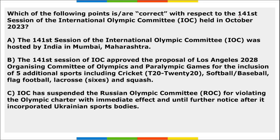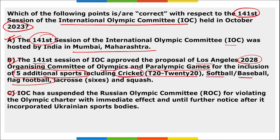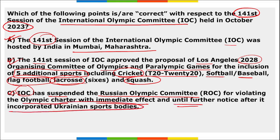Regarding the 141st session of the International Olympic Committee held in October 2023: all three options are rightly mentioned. This session was hosted by Mumbai, Maharashtra. The IOC approved the proposal of the LA 2028 organizing committee for inclusion of five additional sports: cricket T20, softball, baseball, flag football, lacrosse, and squash. The IOC also suspended the Russian Olympic Committee for violating the Olympic Charter after incorporation of Ukrainian sports bodies.